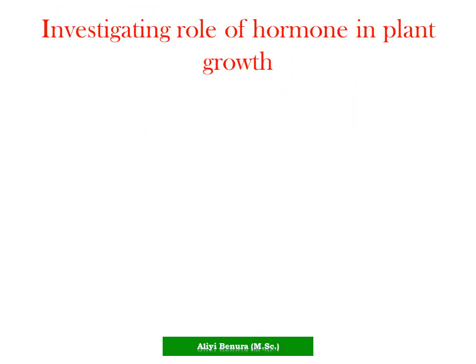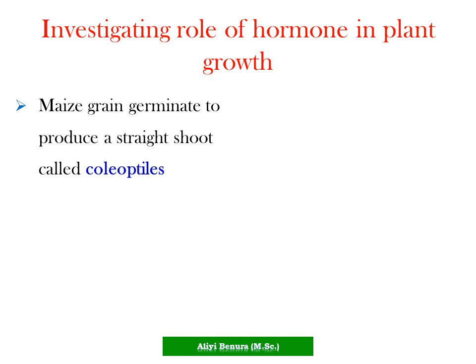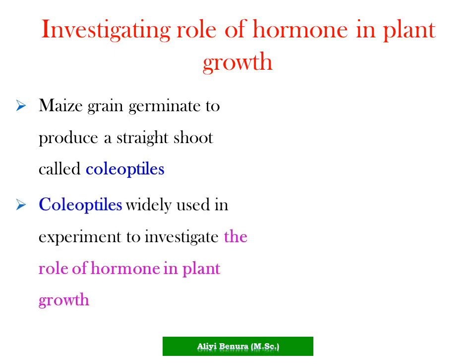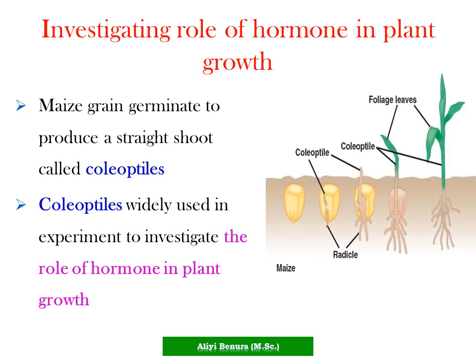Investigating the role of hormones in plant growth. Maize grains germinate to produce straight shoots called coleoptiles, which are widely used in experiments to investigate the role of hormones in plants. In general, a young plant known as coleoptile is used to investigate the role of hormones.